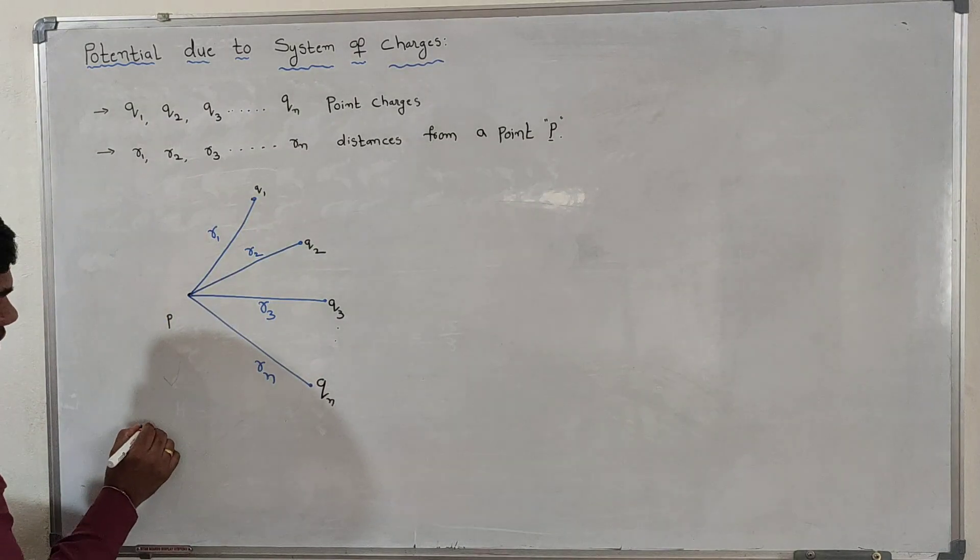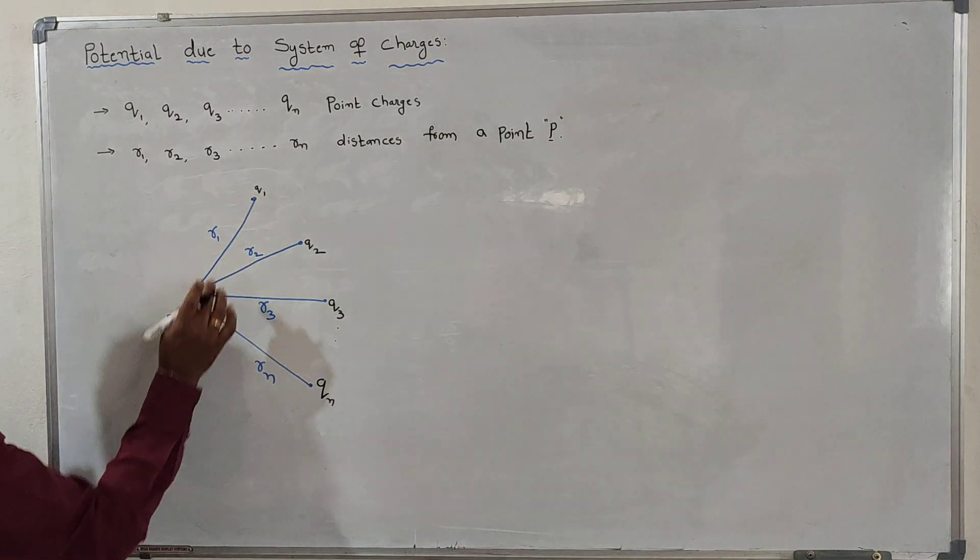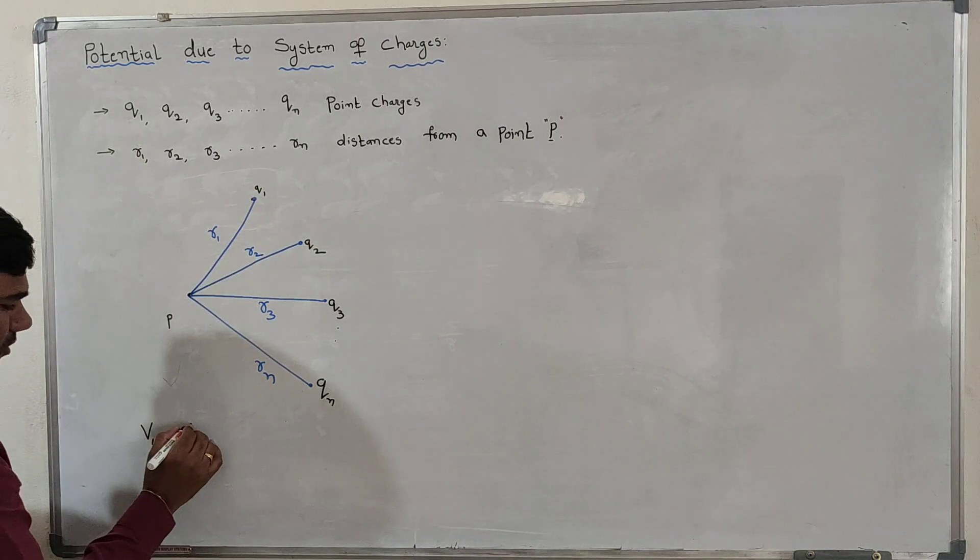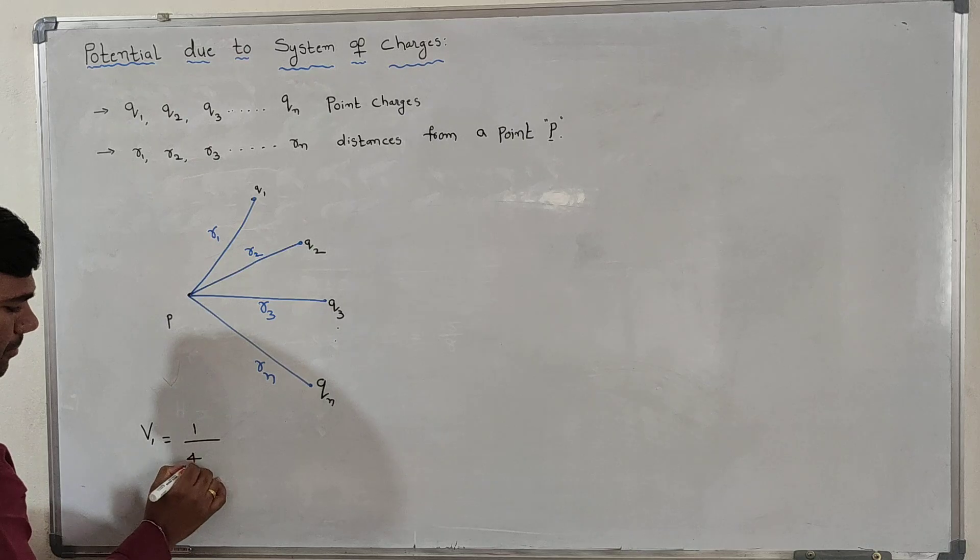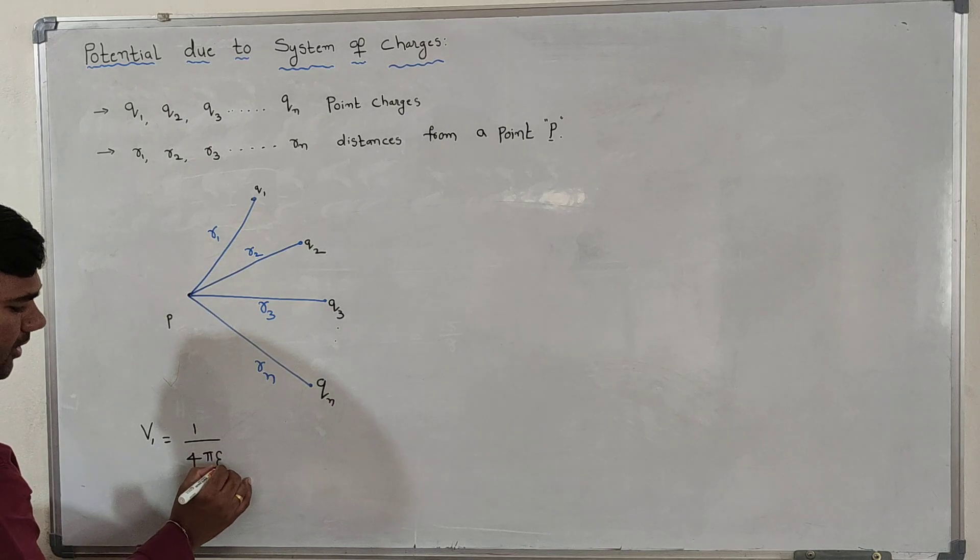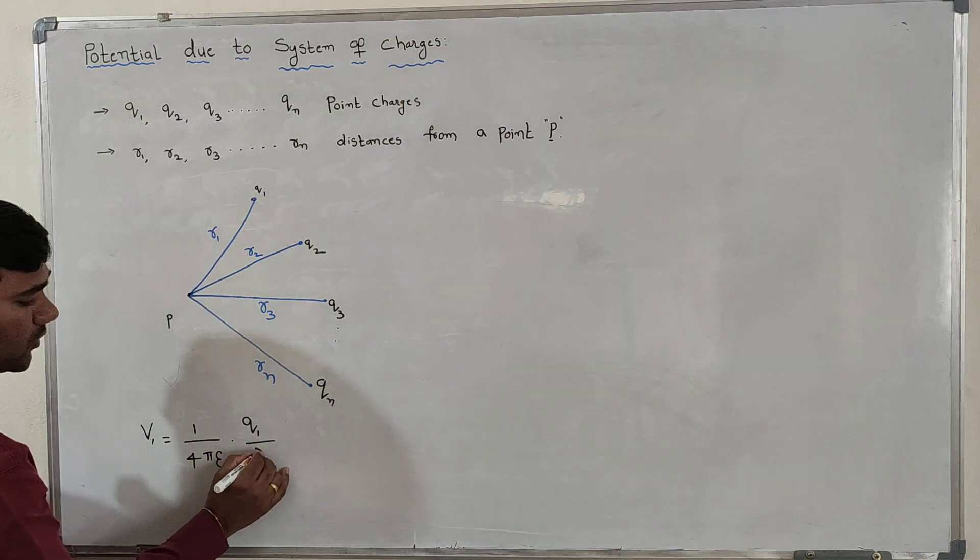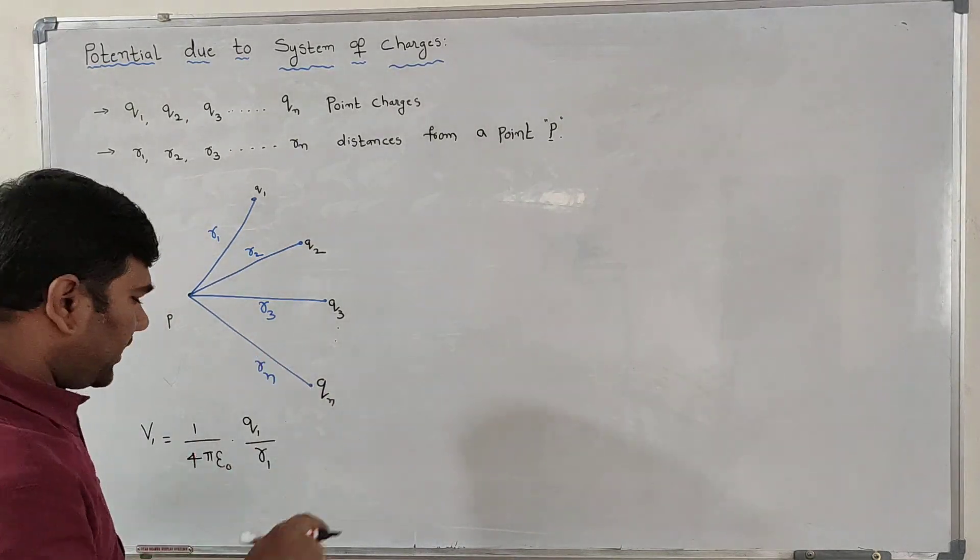That is, potential due to charge 1 at point P. We know the formula: 1 by 4πε₀, Q1 by R1.